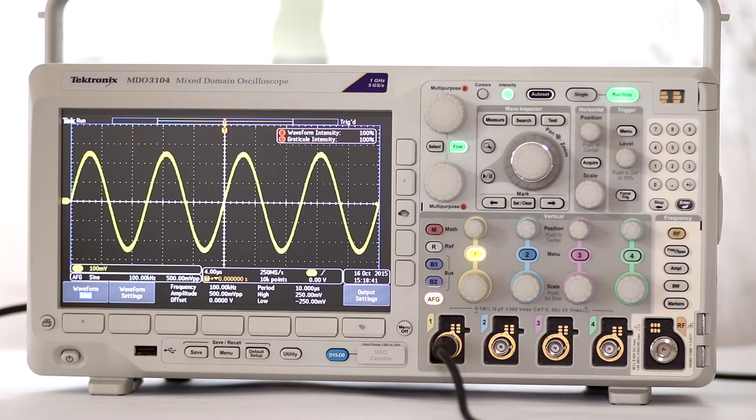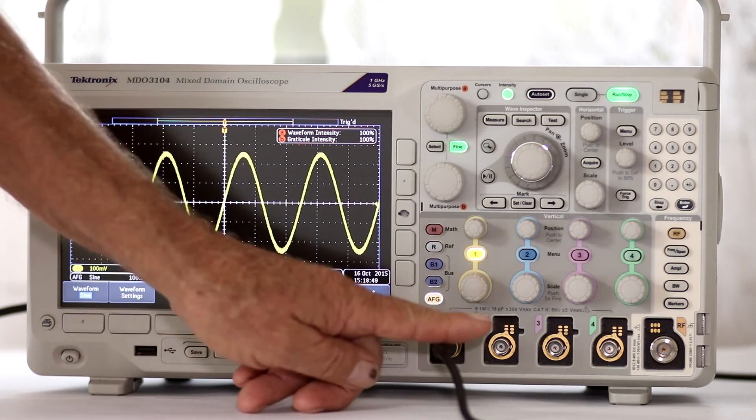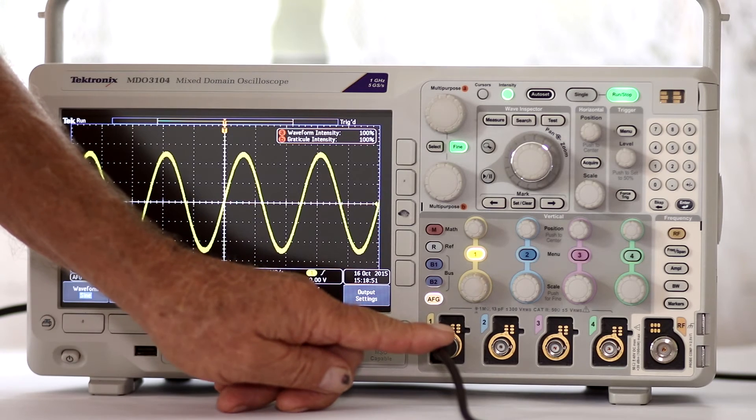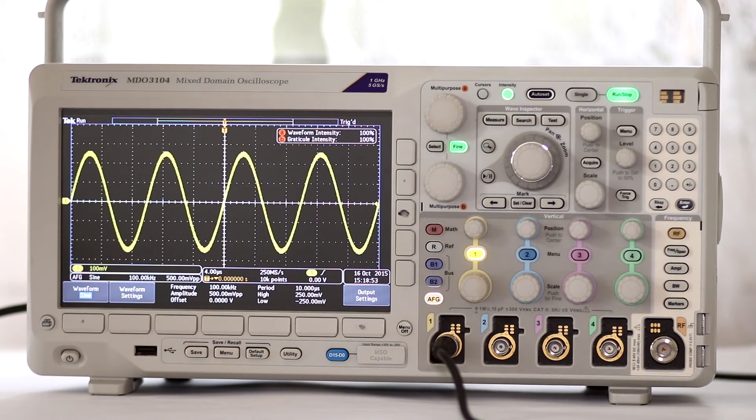We've connected a BNC cable from the AFG output on the back panel to the channel 1 analog input on the front panel. We could just as well access an external signal through a probe, but this method works well because electrical parameters can be adjusted easily for comparison. Here we have chosen the default sine wave with default voltage and frequency values.